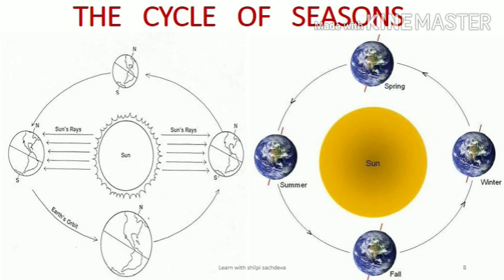The cycle of seasons is caused due to the inclination of the Earth's axis at a fixed angle and direction, and the revolution of the Earth around the sun.